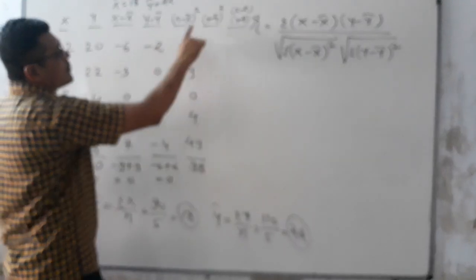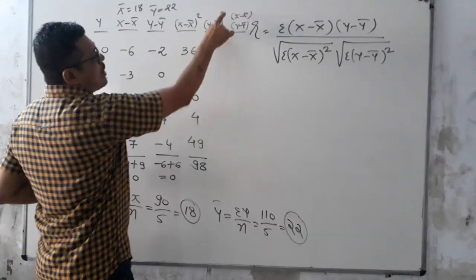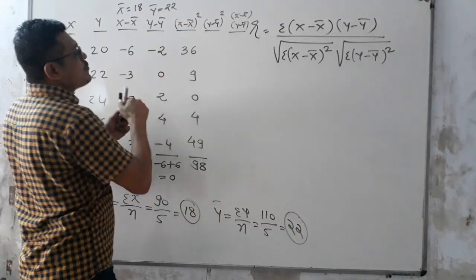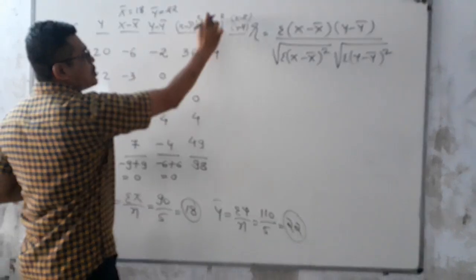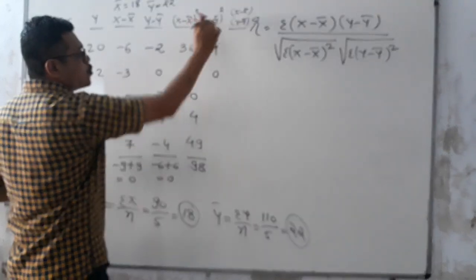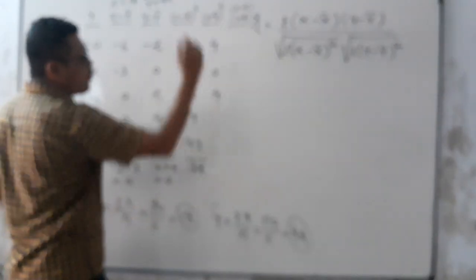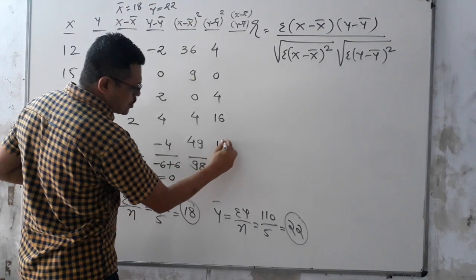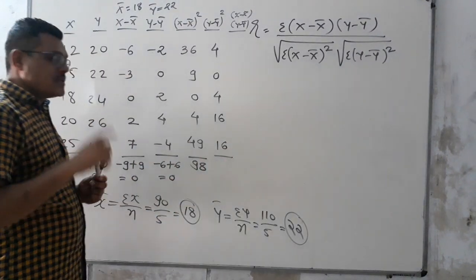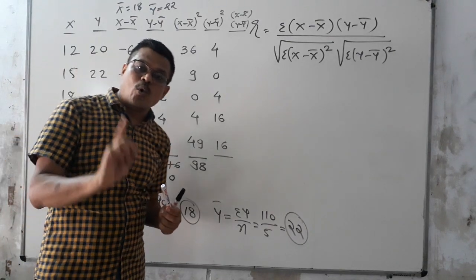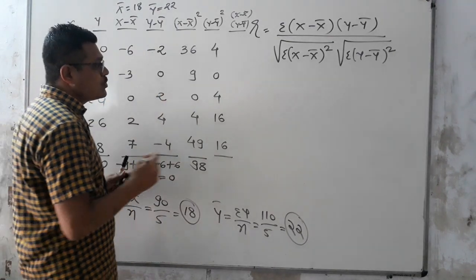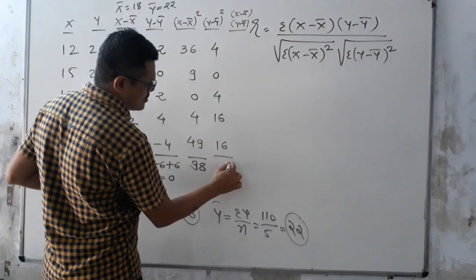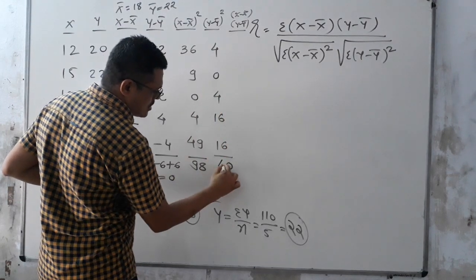Next column: (Y − Ȳ) whole square. Square each value from column 2. Remember, the square is always positive. So: (−2)² = 4; 0² = 0; 2² = 4; 4² = 16; (−4)² = 16. The total is 40.